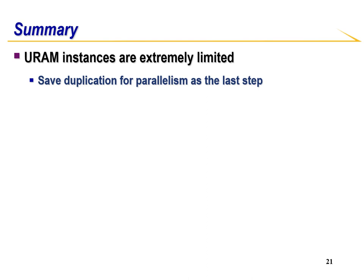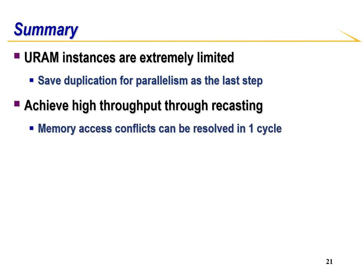In summary, URAMs are extremely limited. It is easy to solve throughput issues by duplicating resources, but for URAM it should be done last. One way to achieve high throughput with limited resources is to recast the data type. In BQSR, we can avoid duplicating each table 16 times by using integer intermediates and then recasting to double at the actual table update.